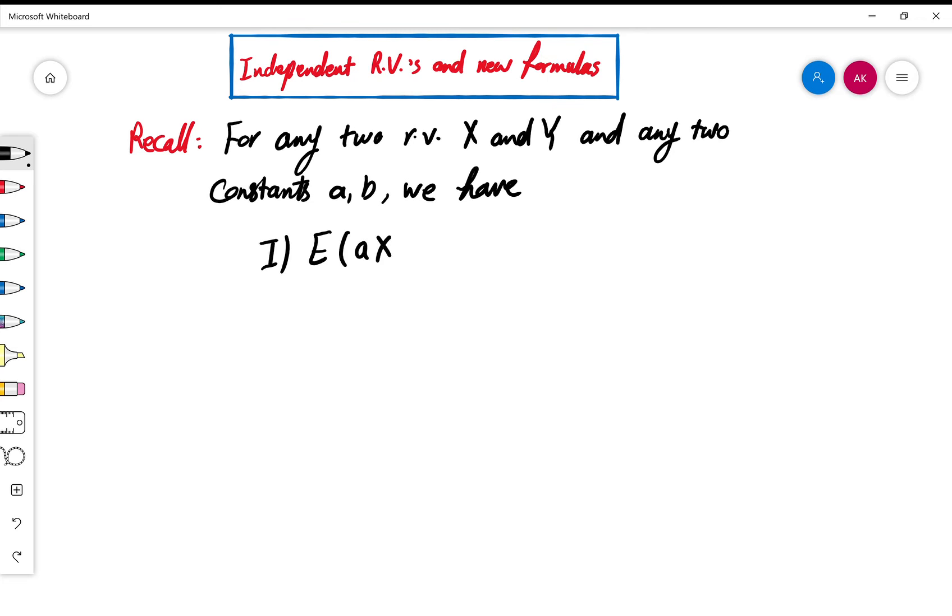First, E(aX+b), this is another random variable and its expected value is given by a·E(X)+b. Expected value of aX+bY is also equal to a times expected value of X plus b times expected value of Y.